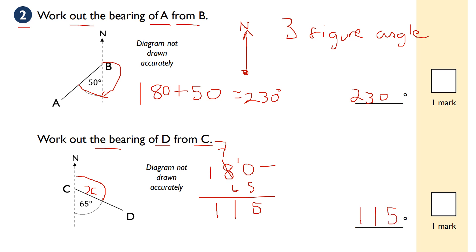That's bearings summarized in two minutes. This is probably one of the least favorite topics on the GCSE 9 to 1 maths curriculum. A lot of my students detest this, and I'm not a big fan of it either. But just learn the key parts: we always measure from the north line, always measure clockwise from north, and it's always a three-figure angle.